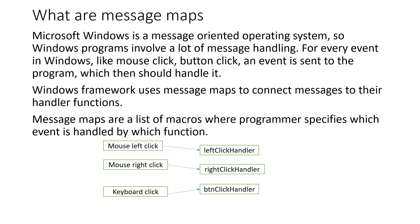Microsoft Windows is a message-oriented operating system, and every Windows program involves a lot of message handling when you deal with UI. For every event in Windows — like mouse click, button click, etc. — that event is sent to the program which then should handle it, and this event travels through messages.